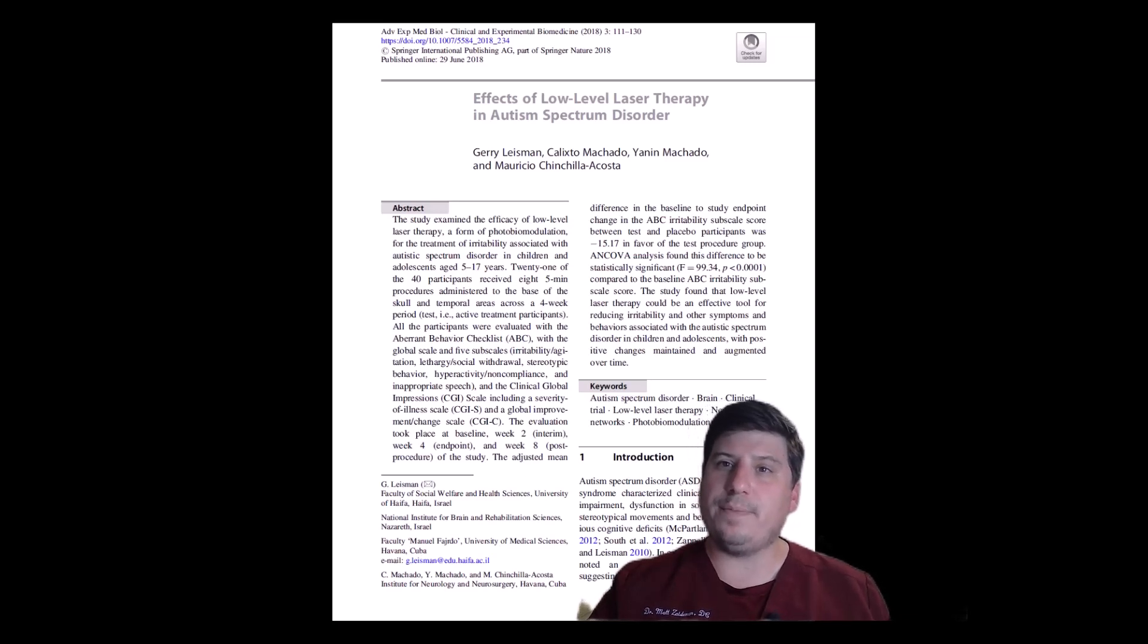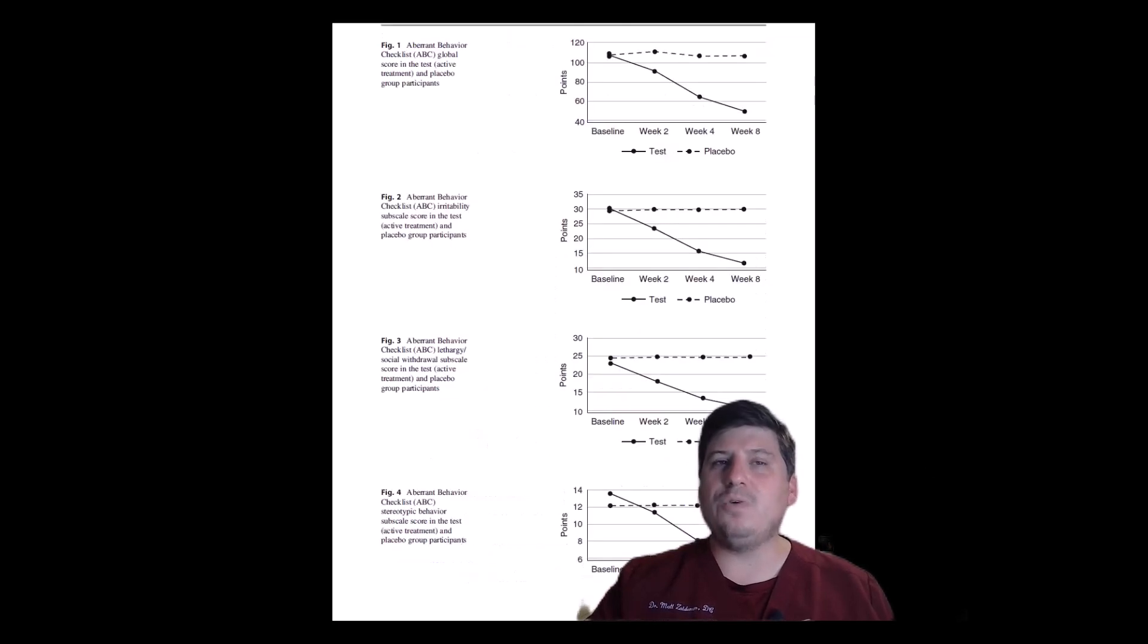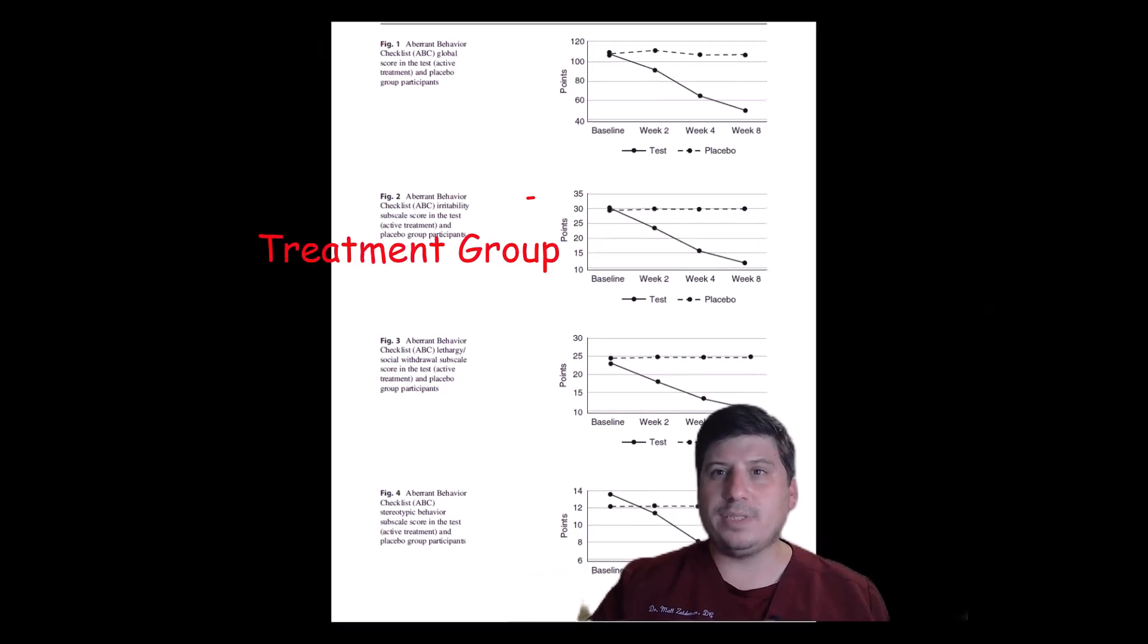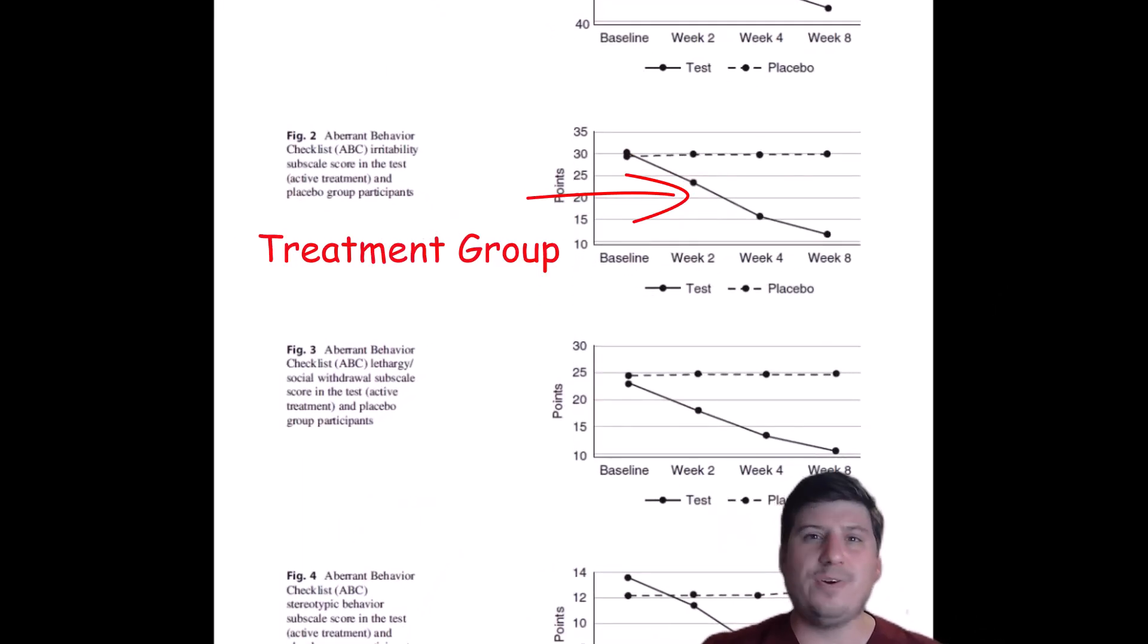The treatment group received low-level laser therapy to the head two times a week for four weeks. Outcomes were measured by pre and post measurement of the aberrant behavior checklist, which has a global scale and also has five sub-scales including irritability, social withdrawal, stereotypical behavior, inappropriate speech, and hyperactivity. And results showed reduction in every single category while the sham or placebo treatments showed no improvement whatsoever.